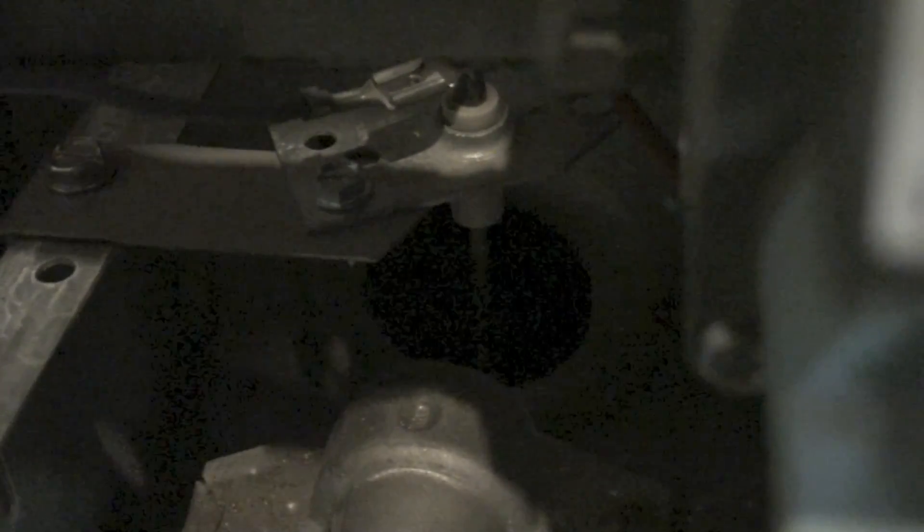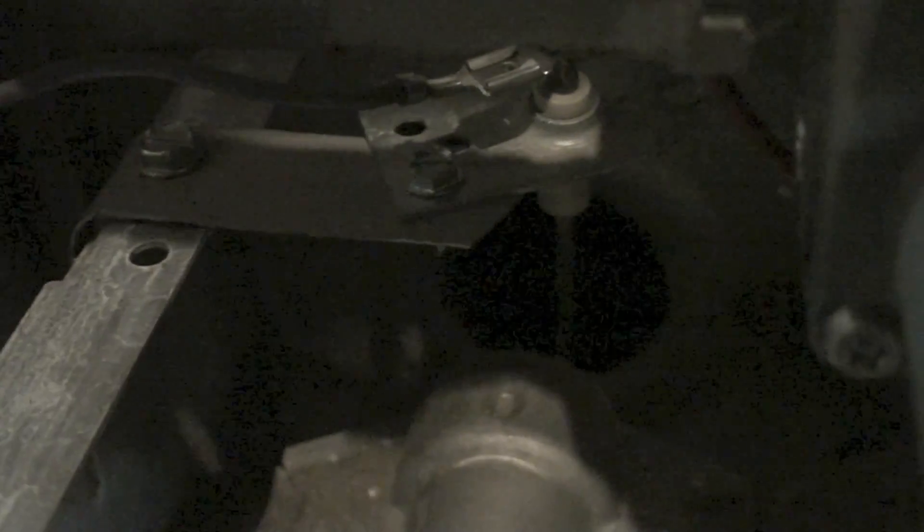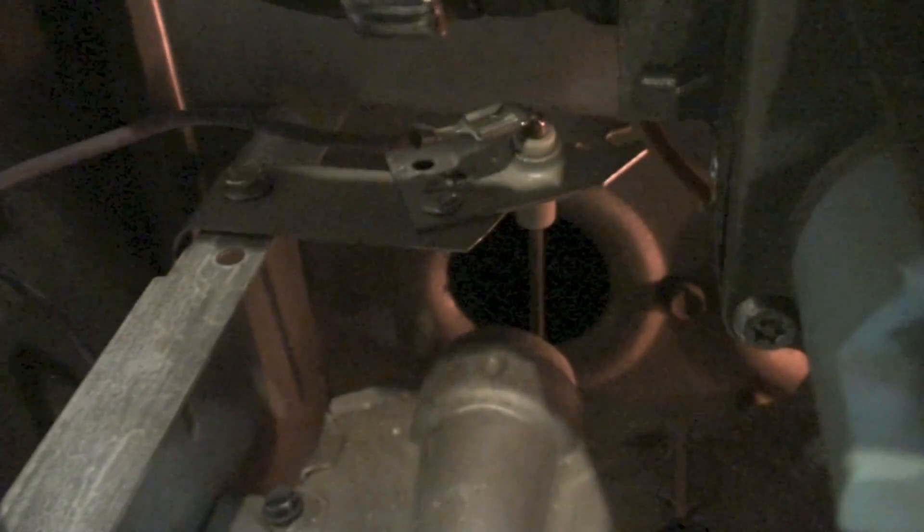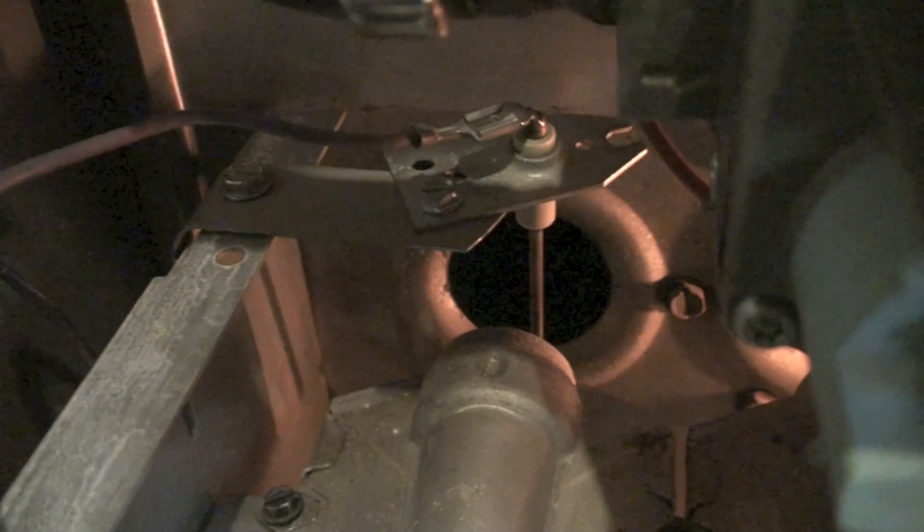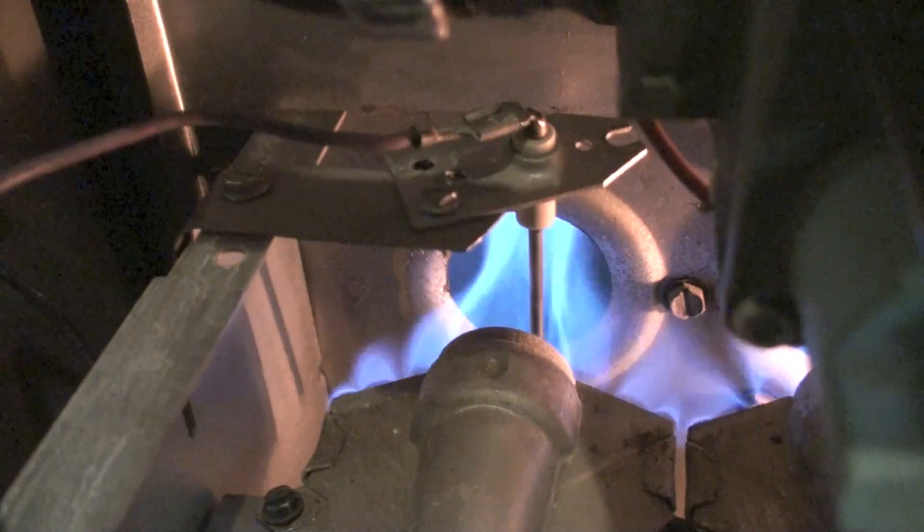And it works by flame rectification. Flame can actually transmit power. So if I feed an alternating current into the flame rod to the chassis or the burners, when it's negative going to the flame rod, power is passing from the flame rod to the burners.